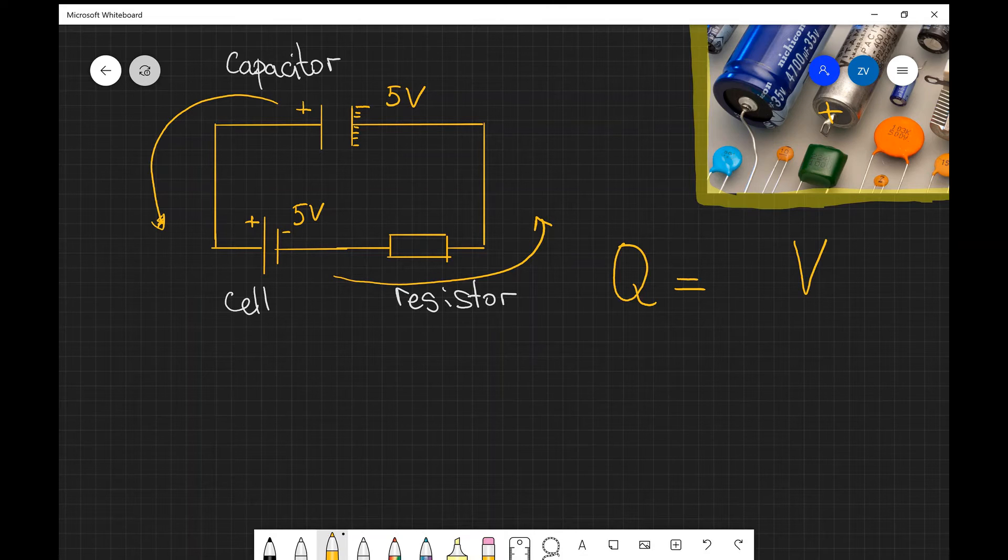There's a constant of proportionality between the amount of charge and the potential difference, and this is known as the capacitance.